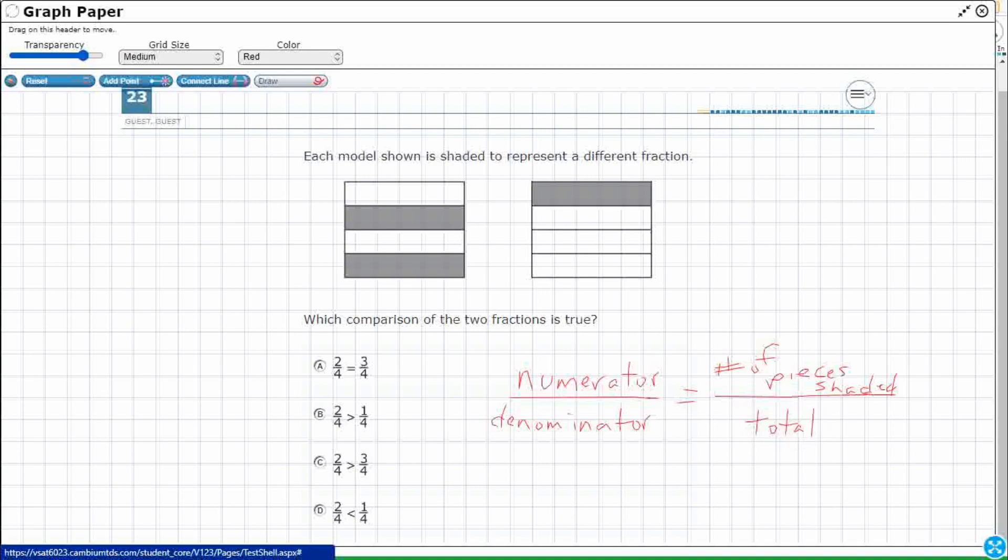And so let's take a look at these two fractions here. So this one on the left, I've got two pieces shaded, okay. So I'm just going to label that as a two as my numerator. And then I've got, let me change colors here. I've got one, two, three, four pieces total. All right, so that's two fourths.